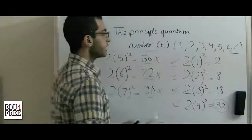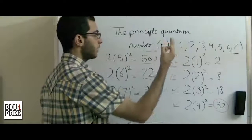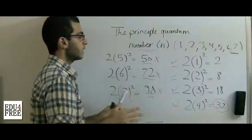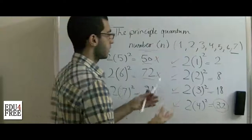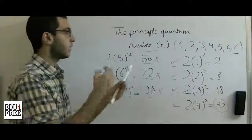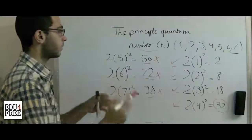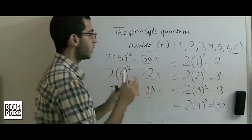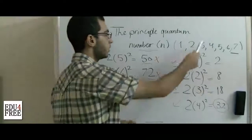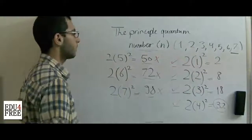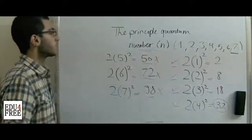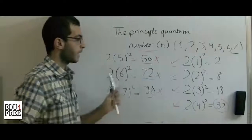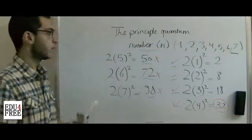So the principal quantum number can only be 1, 2, 3, 4, 5, 6, or 7. There are no fractions like 1.5, 1.25, or 1 and a third — just whole numbers. This is an important property of the principal quantum number.